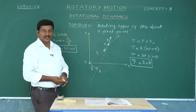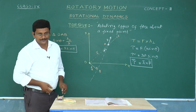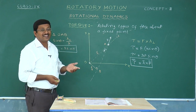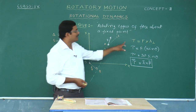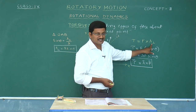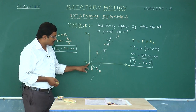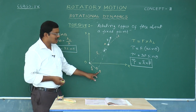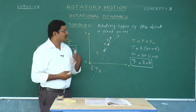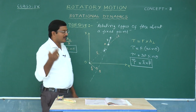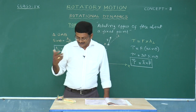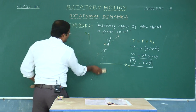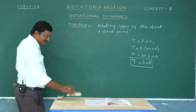Once again: torque is the rotating effect of force about a fixed point. When you apply force on a body not along the line through the center of mass, it will rotate. To calculate that rotating effect, torque equals the product of the force applied and the perpendicular distance from the fixed point to the line of action of force. In this way we can calculate the torque and analyze where and how to apply it.